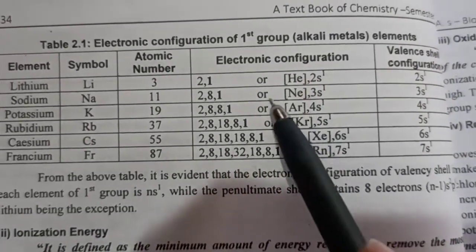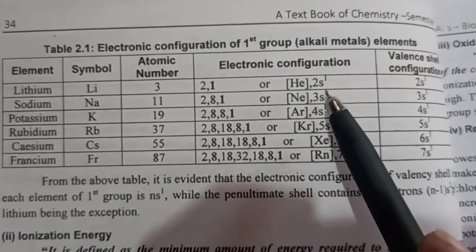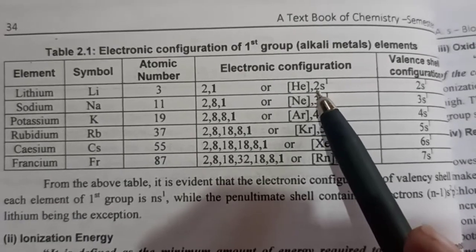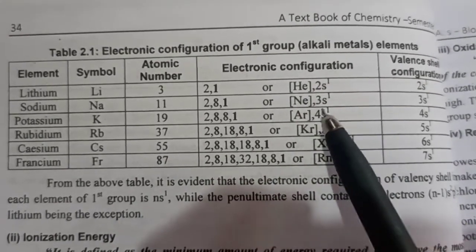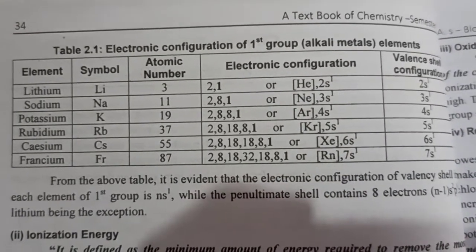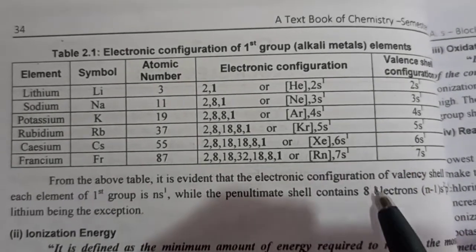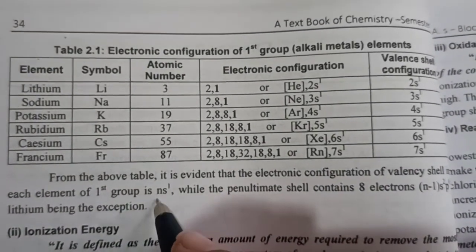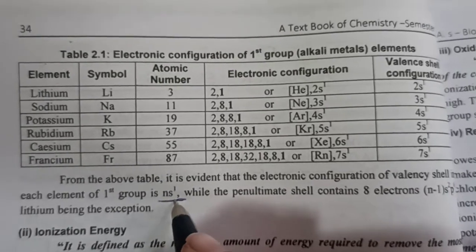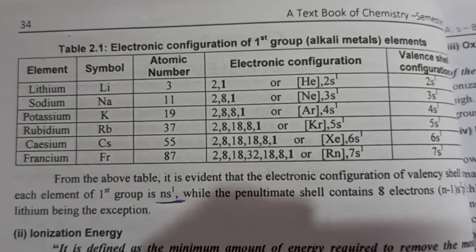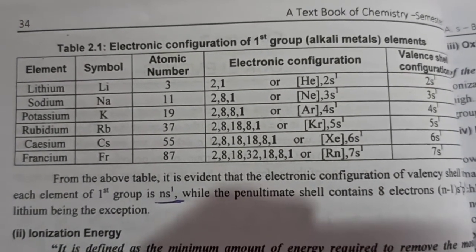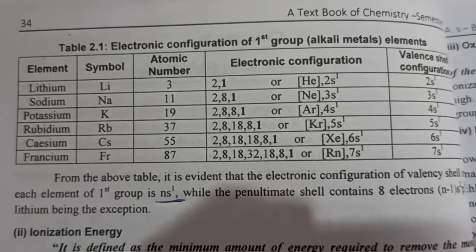So in general, the electronic configuration of this group will be NS1. That is 2S1, 3S1, 4S1 and so on. The general electronic configuration of this first group will be NS1. This is all about the electronic configuration of first group elements.